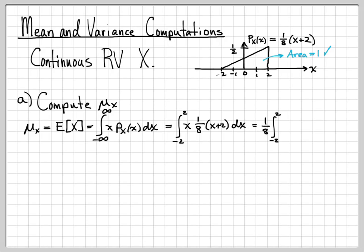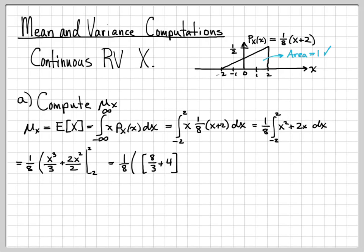I now have an integral to evaluate with respect to x. I'll pull the one eighth out front since it's a constant, then distribute x to get x squared plus 2x. So now I just need to integrate this polynomial, which is straightforward. x squared integrates to x cubed over 3, and 2x integrates to 2x squared over 2. I need to evaluate this at the limits 2 and minus 2. Leaving the one eighth out front, I evaluate at 2: 2 cubed gives 8 over 3, and x squared at x equals 2 is 4.